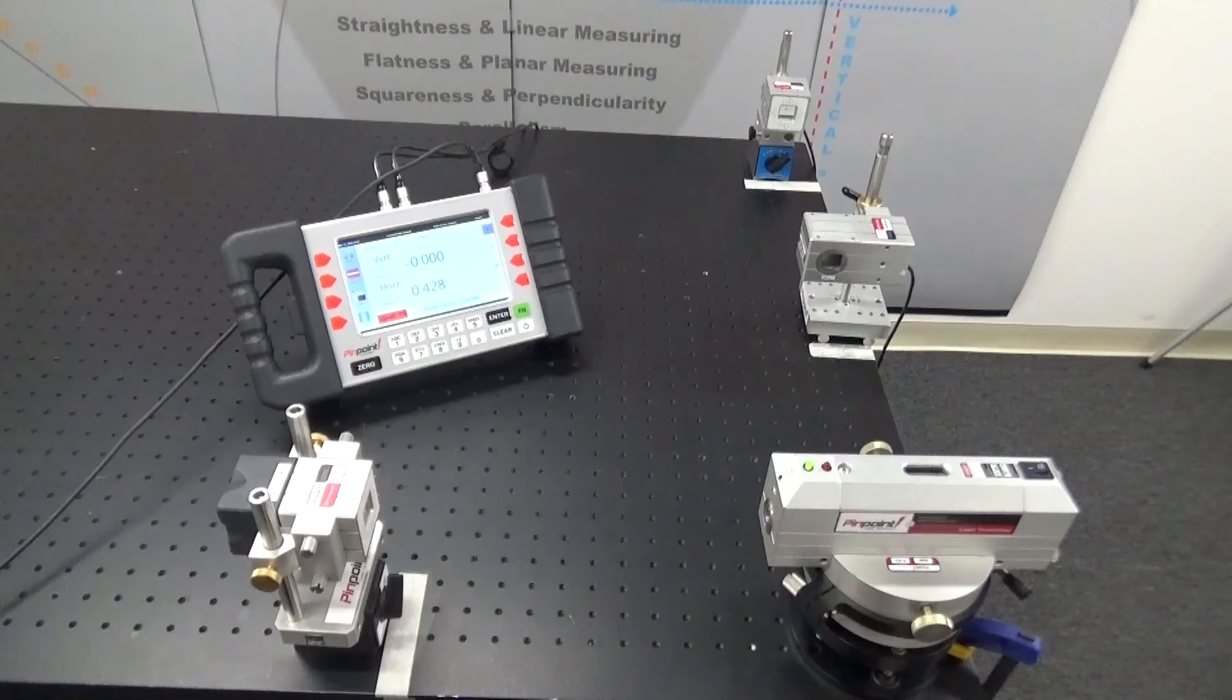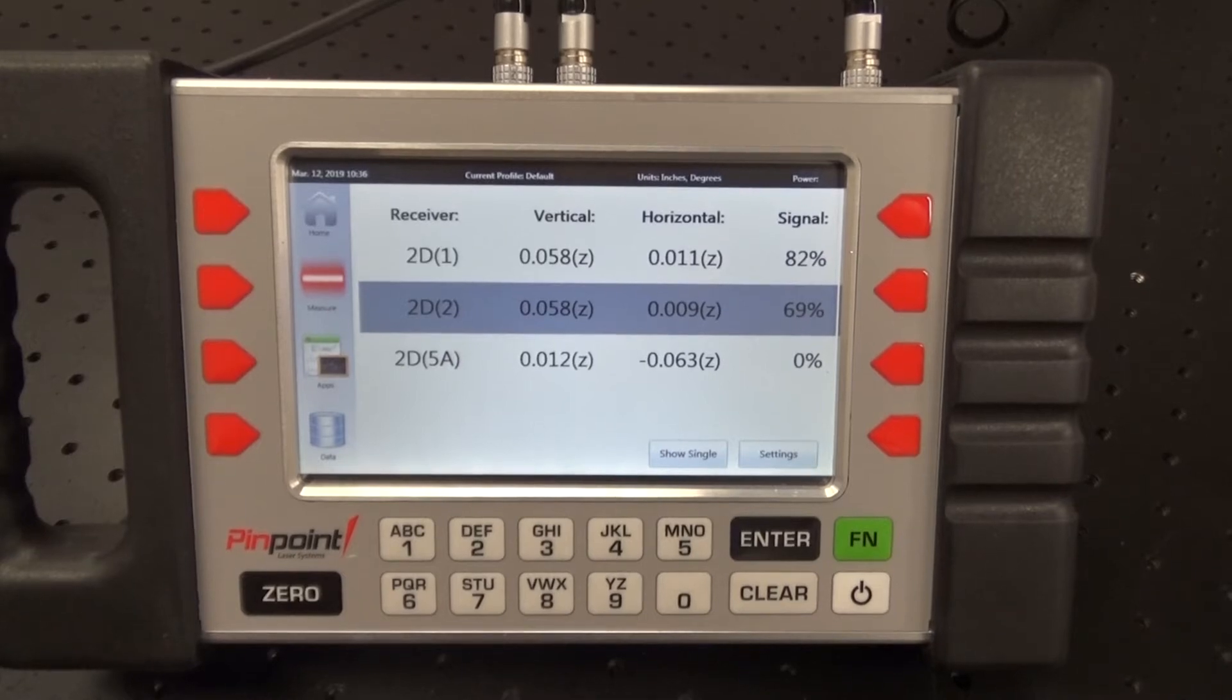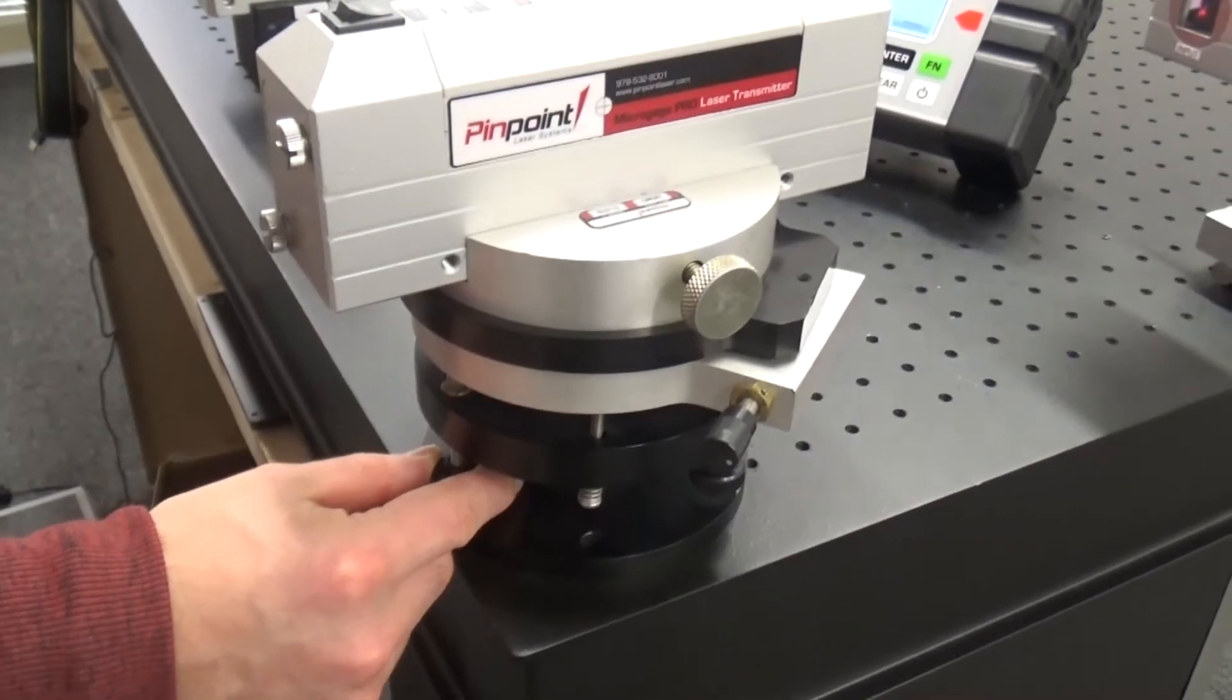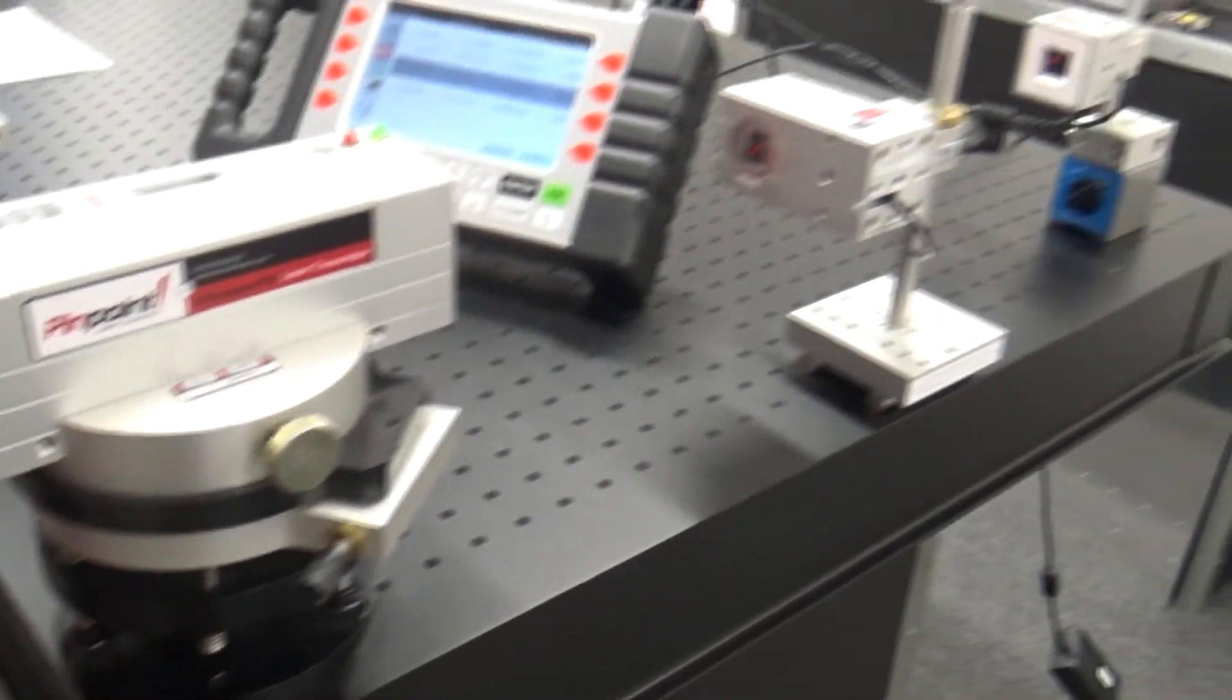Next, form a 90 degree L shape pattern. Then set the display to show all three receiver readings simultaneously. By shooting through two receivers, we can quickly adjust the back pitch knob and level out the laser in that direction until both vertical readings are matched. These two receivers are now reading 59 thou vertically.